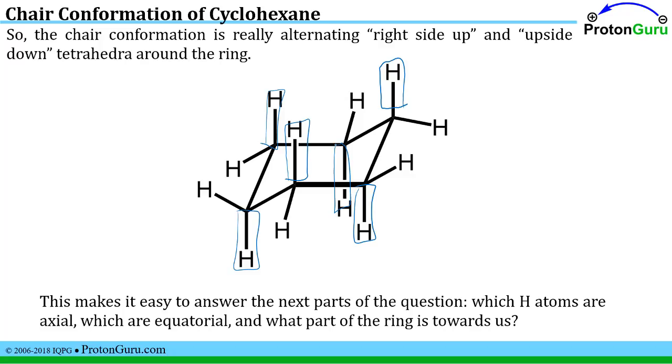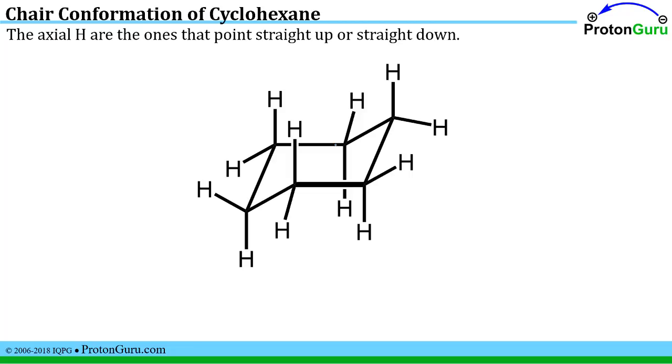So understanding that it's really just alternating right side up and upside down quote unquote tetrahedra makes it easy for us to answer the question about which are axial and equatorial, if we know the definitions. The axial hydrogens are the ones that point straight up or straight down. We've kind of been circling those already so just highlighting those in blue makes those easy to see.